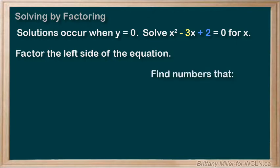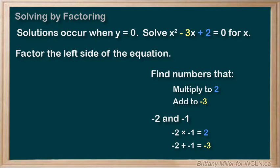Let's find two numbers that multiply to positive 2 and add to negative 3. What about negative 2 and negative 1? Negative 2 times negative 1 equals 2, and negative 2 plus negative 1 equals negative 3. Wonderful.